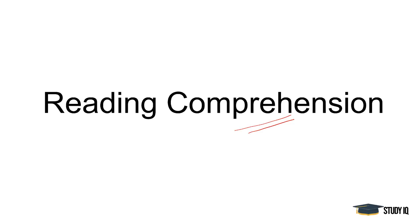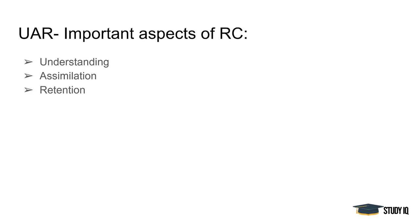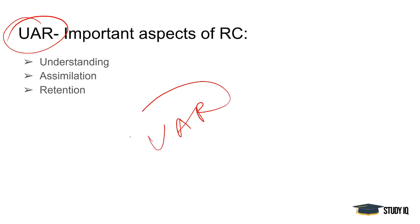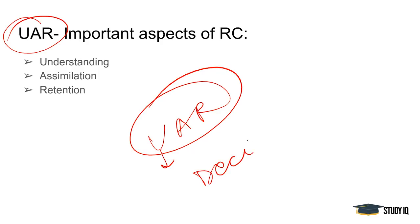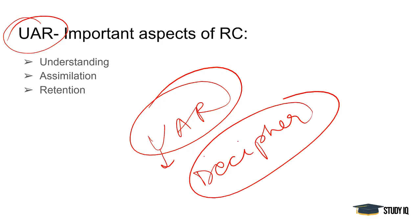For reading comprehension, we have to remember two things. First is the UAR model. If we talk about the UAR model, understanding is an important aspect. You have to understand and decipher the passage — this is very necessary.